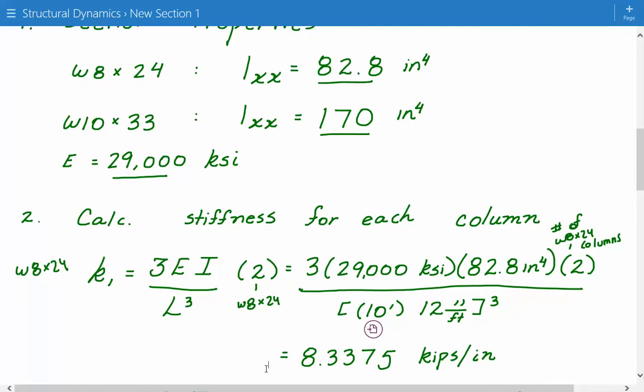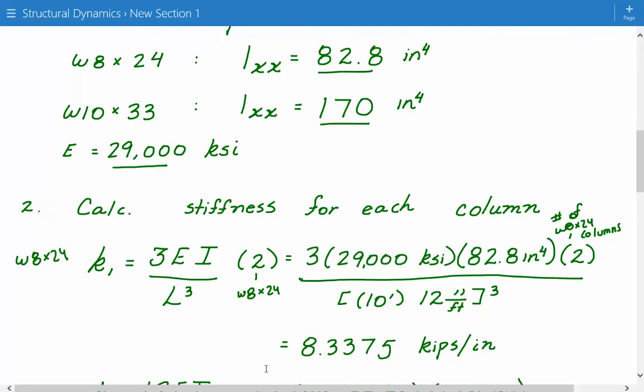So this gives us the stiffness for the W8 by 24 columns, two of them, 8.3375 kips per inch.